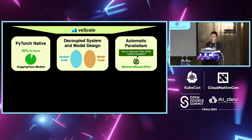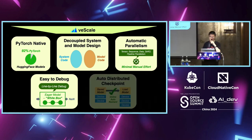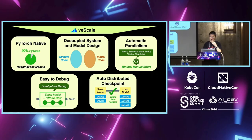The third feature we're trying to achieve is automatic parallelism — minimizing human effort when deciding the parallelization plan, like how to do TP and PP. The fourth feature is that V-Scale is easy to debug because it supports eager execution, and you can break into your lines of code and print out all the information you need. And it also supports automatic checkpoints, so we can easily save and load on different scales of cluster.